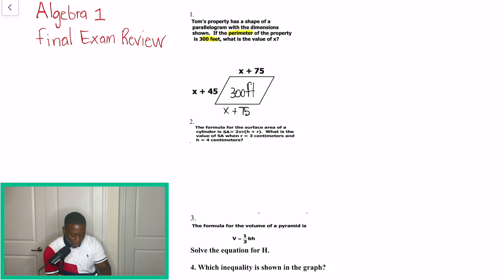So we have X plus 75 on the bottom, X plus 45 on the right hand side. Now, what we need to understand is that perimeter, once we add all four of these sides, is going to equal to 300. And we have to create an equation to set up so that we can solve for X.